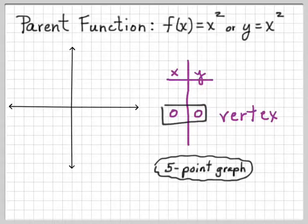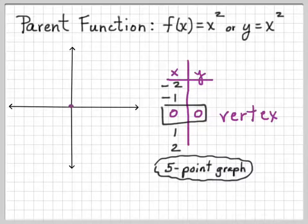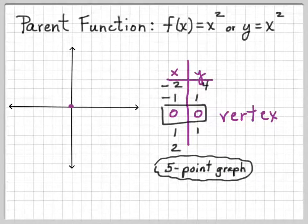So you need a five-point graph: the vertex, two points to the left of the vertex, and two points to the right. To the left we could do x = -1 and -2, and to the right x = 1 and 2. When we plug in x to find y, we have (-1)² = 1, (-2)² = 4, 1² = 1, and 2² = 4.